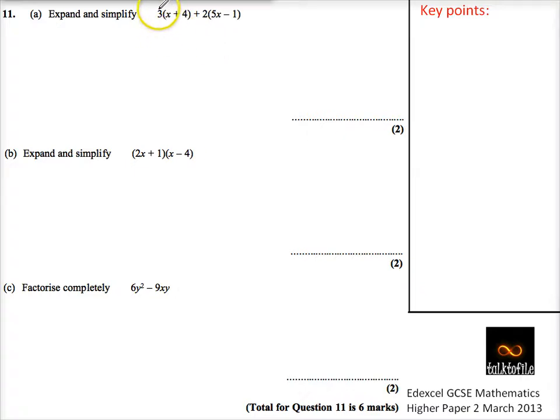So if I do 3 times x, gives me 3x, and I have 3 times 4, gives me 12. If I then look at the other question, this says 2, and it's plus 2, or we'll do the plus in a minute, so it's 2 times 5x is 10x, and 2 times minus 1 is minus 2.